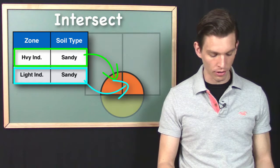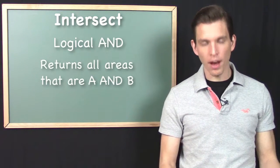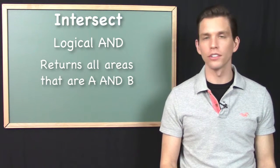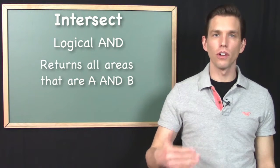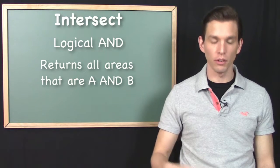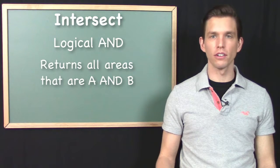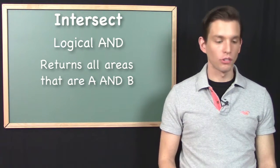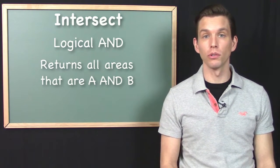This is the way the intersect operator works. The bottom line is that the intersect operation is all about logical AND, and it's extremely useful. Anytime you need to know all areas that are this, and this, and this — use that word AND and immediately think intersect. It's a tool you're going to use all the time. We'll wrap up intersect here and move on to the next geoprocessing tool in the next video.